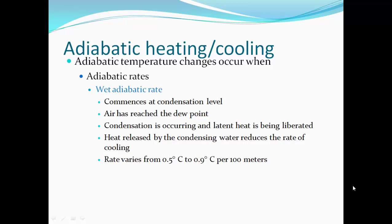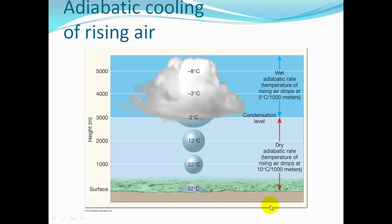If air rises to the point where it is 100% saturated, we use the wet adiabatic rate. That commences at the condensation level — when the air has reached dew point and starts forming clouds. Condensation is occurring and latent heat is being released. Heat released by condensing water reduces the rate of cooling, dropping it to about half a degree Celsius per 100 meters — cooling or warming at half the speed compared to dry air. This pocket of air rising loses 10 degrees Celsius per 1,000 meters until it hits dew point, then cools at 5 degrees Celsius per 1,000 meters.